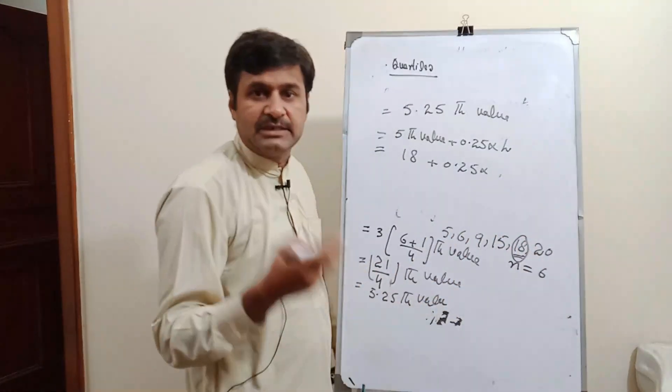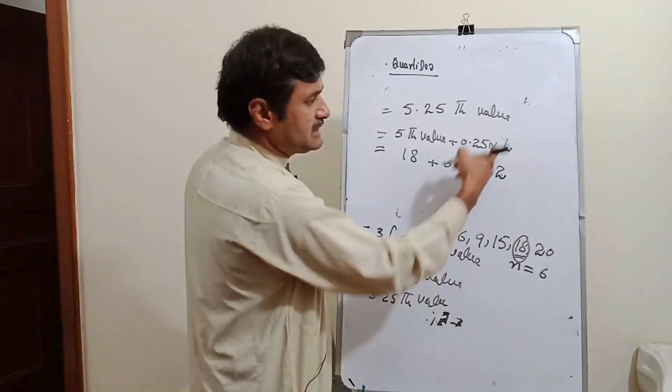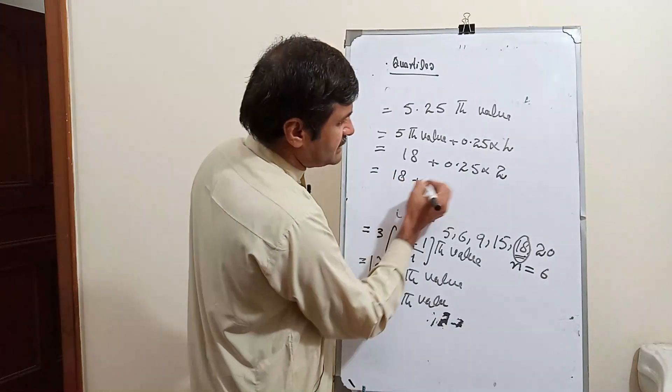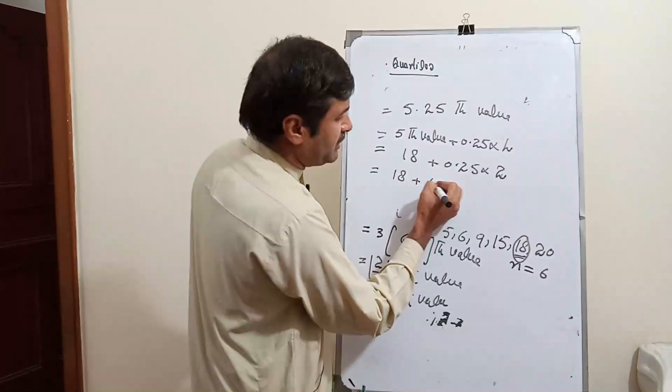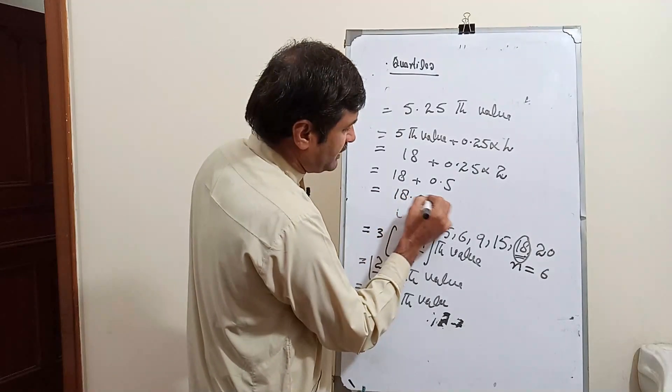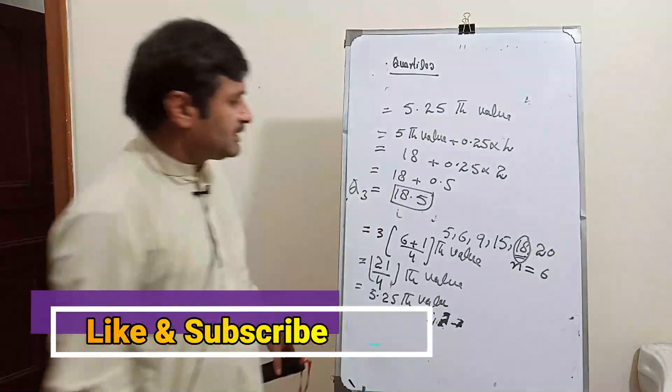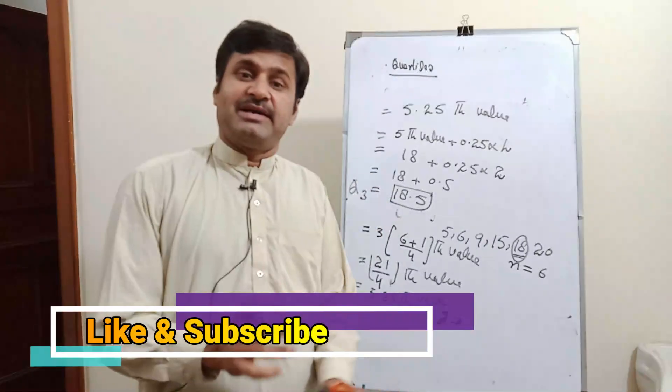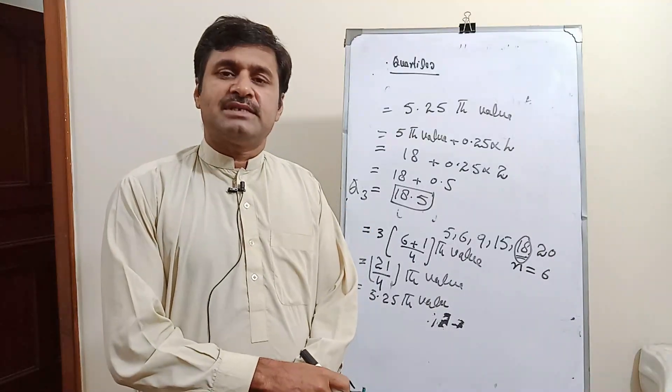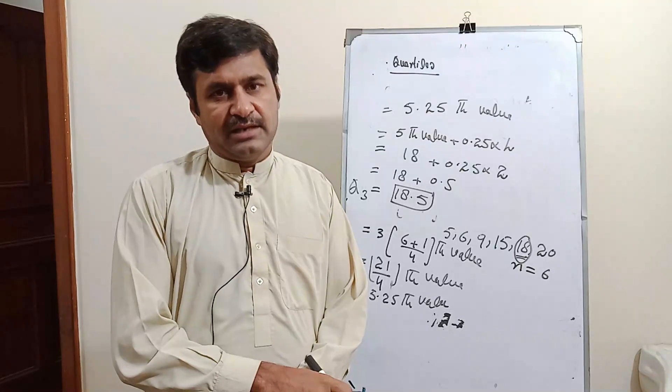H is the difference between the 5th and 6th values. So 5th value is 18 and 6th value is 20, so the difference is 2. We put this in: 18 plus 0.25 multiplied by 2 equals 18 plus 0.5, which equals 18.5. So this is q3 or third quartile or upper quartile. Hope you understand this lecture. If you like it, please like and subscribe to my channel. Thank you very much.